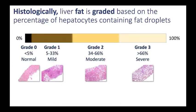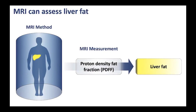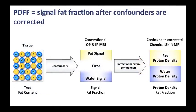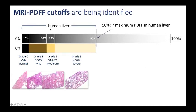Switching to liver fat: histologically, liver fat is graded based on the percentage of hepatocytes containing fat droplets, and there are four grades of steatosis: 0, 1, 2, and 3. MRI can assess liver fat by measuring the proton density fat fraction. The PDFF is the signal fat fraction after the errors or confounders are either minimized or corrected. The PDFF ranges from 0 to 100%, with human liver ranging up to about 50%, and the MRI cutoffs corresponding to the four grades of steatosis are currently estimated at 5%, 16%, and 22%.